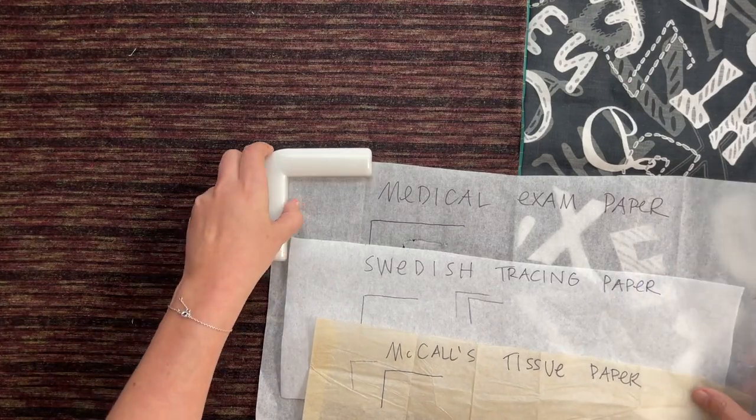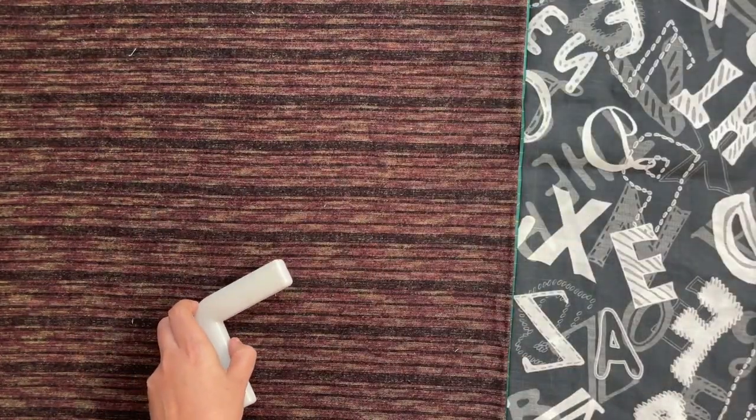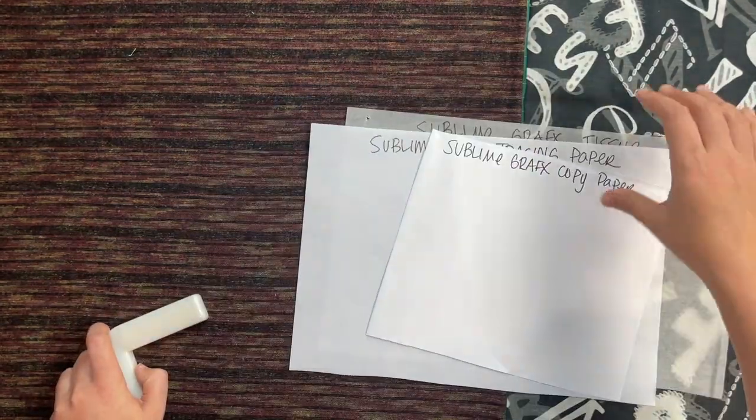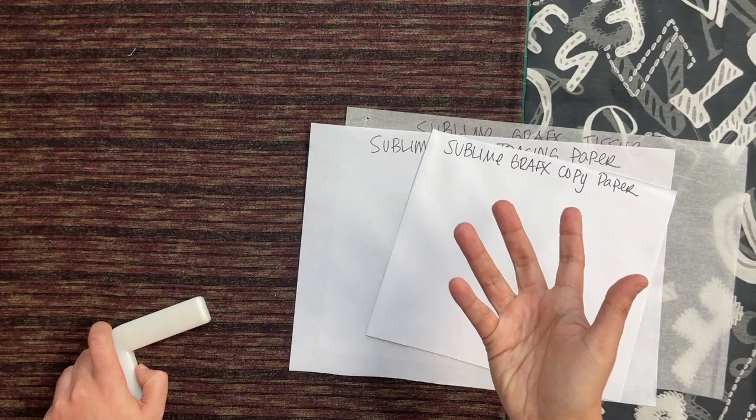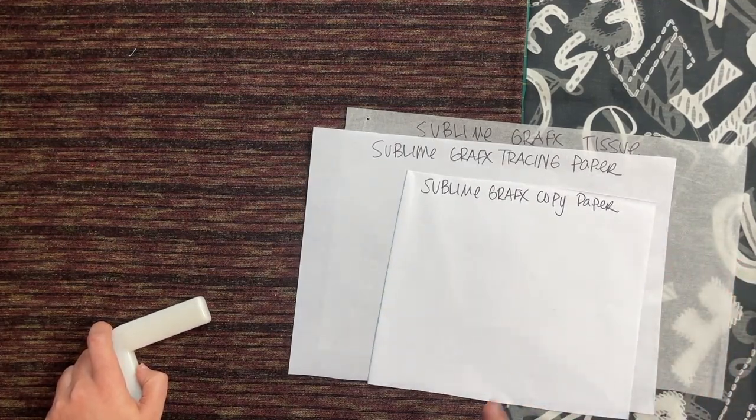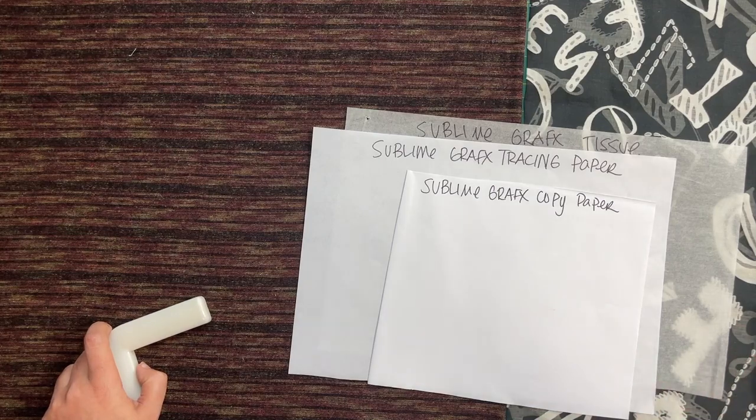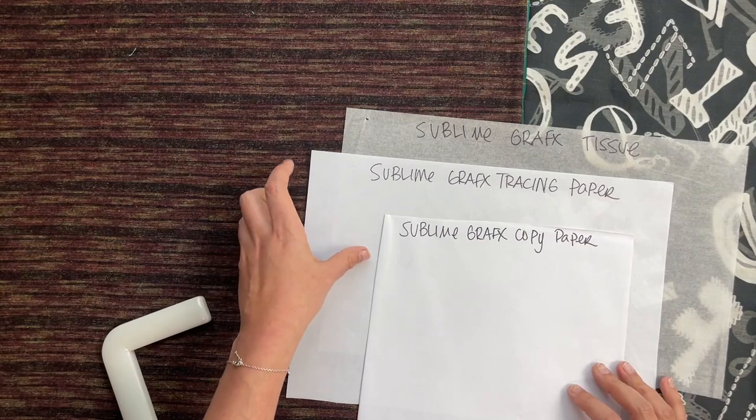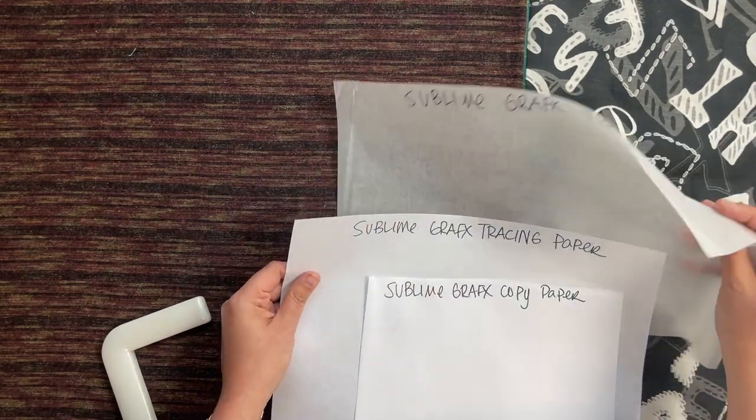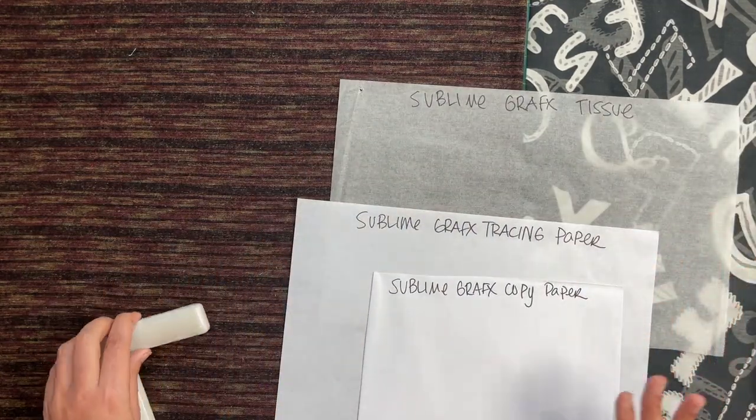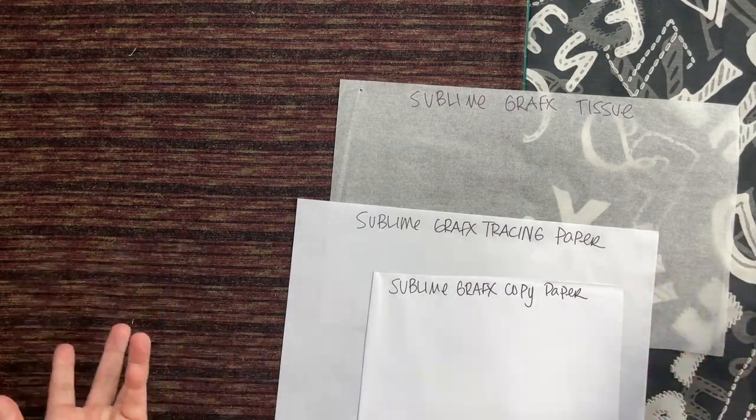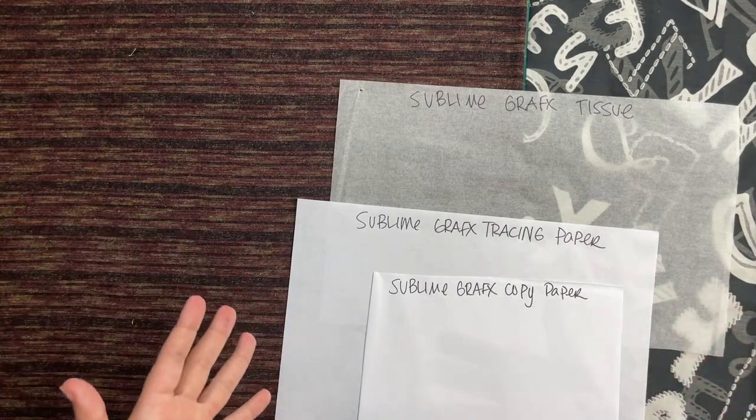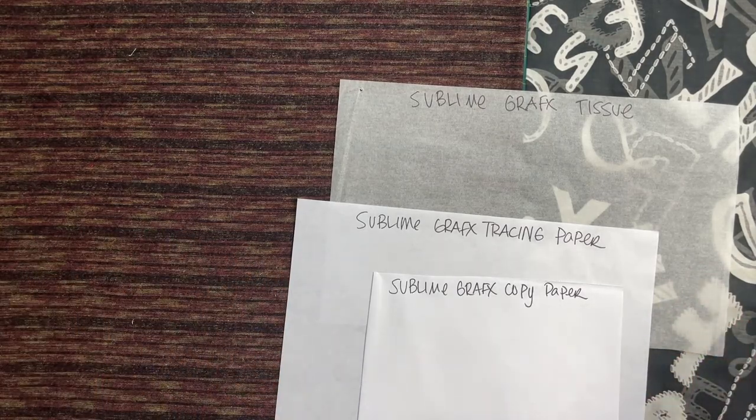Now let's pretend that instead of tracing off a pattern, you actually want to get your pattern printed. You're either going to print it at home on copy shop paper that you get at the office store, or you're going to send it off to a PDF plotter. I think almost every single one of them that I know of prints on copy paper, except for Sublime Graphics that also prints on something called tracing paper and tissue paper. So we're going to do the same tests with these three papers to help you decide if you go to Sublime Graphics, which of the papers are best for you to order.